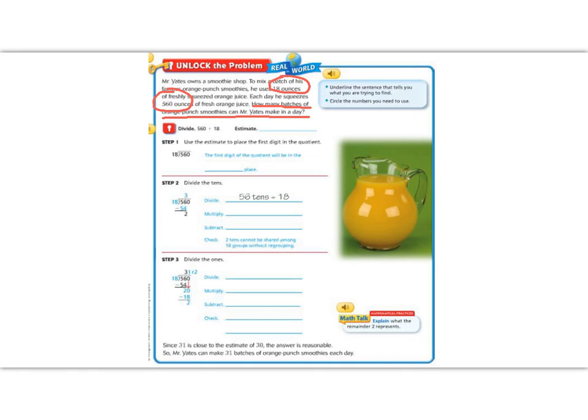So the first thing that we want to do is estimate. In order to estimate, remember we need to pick a compatible number. So let's round 18 to 20, and we need something that is easily divisible by 2. So instead of 560, I'm going to round to 600 because 2 goes into 6 evenly. 2 goes into 6 three times and I have 1 zero left over. So I'm going to predict that he can make about 30 smoothies in a day.